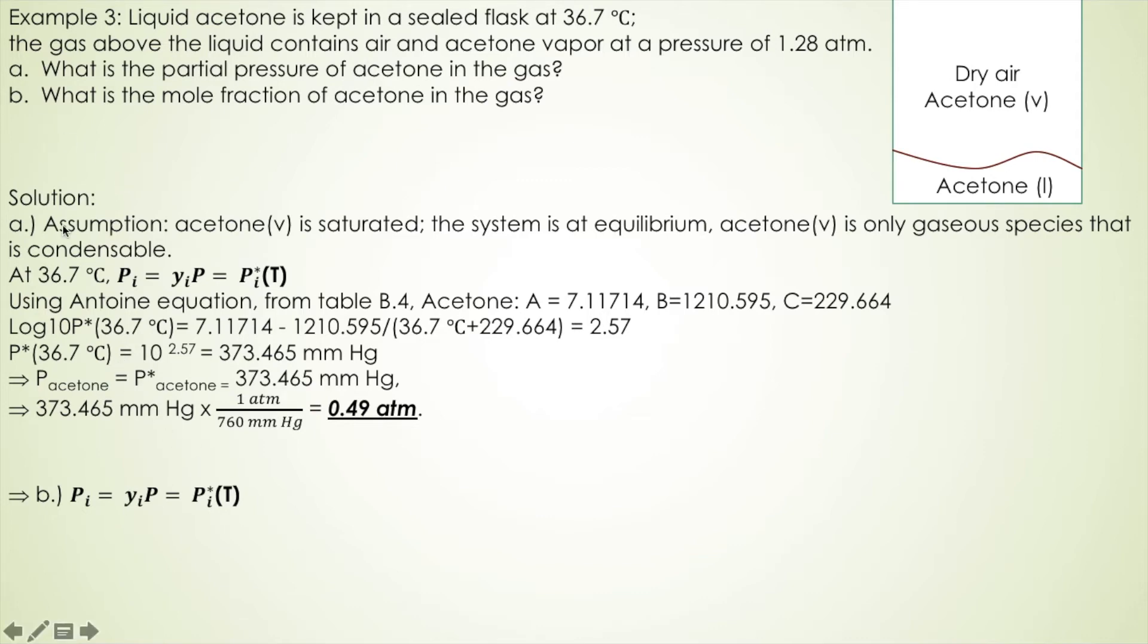And problem B, we know that once you find the partial pressure, the mole fraction is simply using the partial pressure divided by the gas pressure. And the gas phase pressure is 1.28 atm, and then you have 0.49 atm for partial pressure of acetone. And then you can calculate the mole fraction easily.